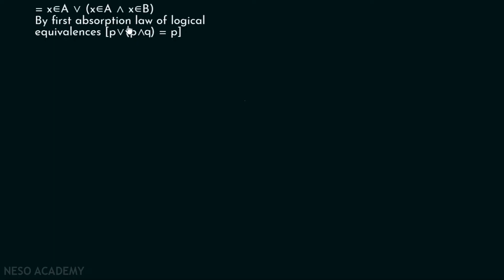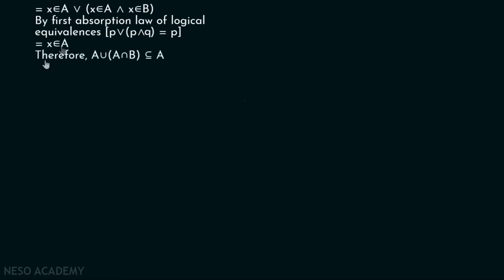This is from the first absorption law of logical equivalences. Here, this is P, this is P, and this is Q. P or P and Q is equal to P. Therefore, X belongs to A or X belongs to A and X belongs to B is nothing but X belongs to A. Therefore, A union A intersection B is a subset of A.